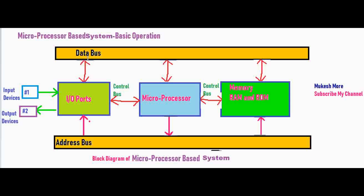The input-output port block is connected to the microprocessor through the data bus. The data bus is a bidirectional bus, so it has two-way communication. It is also connected via the address bus, which is one-way communication. The size of the address bus is 16 bits. This address bus is used for carrying the addresses for different operations, and it is a unidirectional bus — unlike the data bus, which is bidirectional.